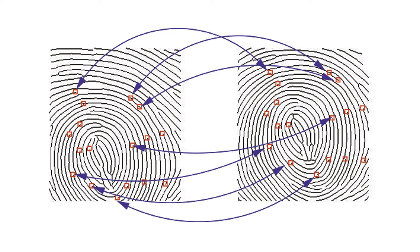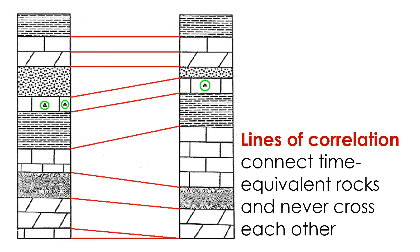They have the same fingerprint. The overarching goal of stratigraphic correlation is to identify time-equivalent rocks, or rocks and strata that formed at the same time, albeit at different sites. For this reason, lines of correlation should never cross each other. That said, two sections can be correlated even if they differ to a degree in terms of the thicknesses and lithologies of the strata and the presence and absence of various structures.